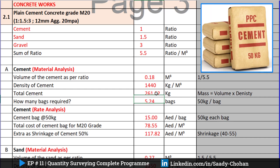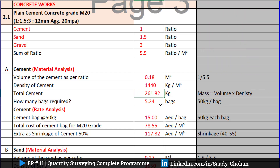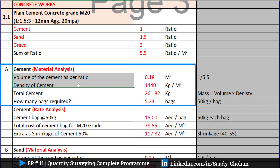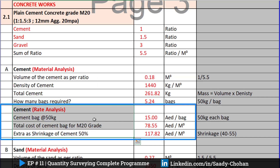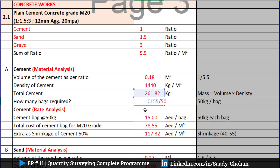We can't buy cement in kg from the market — we buy it in bags. A bag is 50 kg or 60 kg. I've divided the total kg by 50, and we need approximately 5.4 bags, so roughly 6 bags. Up to here is the material analysis. The next phase is rate analysis. I'm linking each Excel cell so if I change anything, all values update automatically.